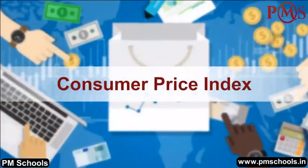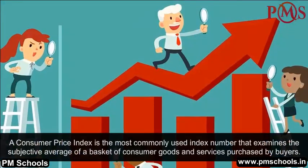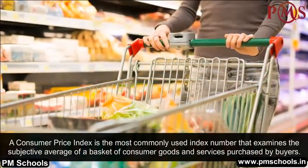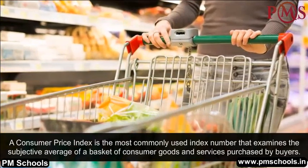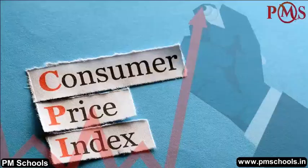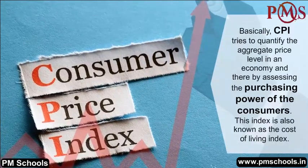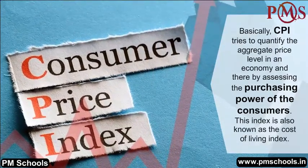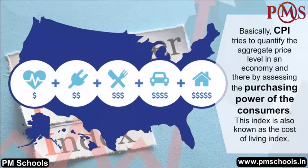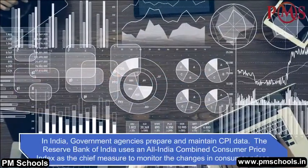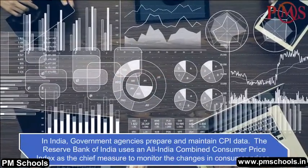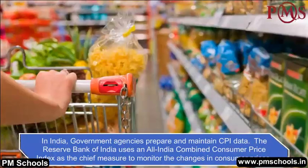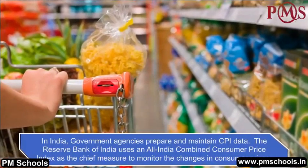Consumer Price Index (CPI). A Consumer Price Index is the most commonly used index number that examines the weighted average of a basket of consumer goods and services purchased by buyers. CPI tries to quantify the aggregate price level in an economy and thereby assess the purchasing power of consumers. This index is also known as the cost of living index. In India, government agencies prepare and maintain CPI data, and the Reserve Bank of India uses an All India Combined Consumer Price Index as the chief measure to monitor changes in consumer prices.